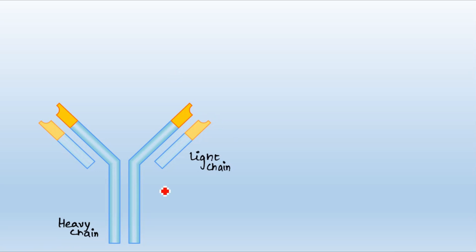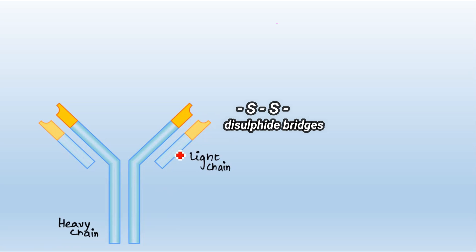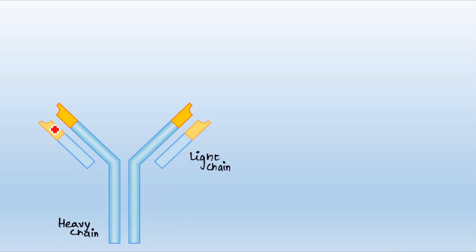In the later part of this lecture I will explain that these chains are bound to each other with the help of disulfide bridges or disulfide bonds. A heavy chain and its adjacent light chain have disulfide bridges within them, and similarly the two heavy chains are also bound to each other with disulfide bridges.